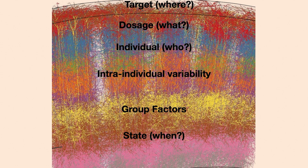To sum up, TMS-fMRI can be used to explore all kinds of factors: the stimulation site, the applied dose, how individuals respond, and how different patient groups or populations respond differently. However, it's important to note that we only get a glimpse of what's really going on, because all of these parameters are not independent from each other. I think we need more sophisticated approaches — perhaps using machine learning algorithms — to test all kinds of different parameter combinations in one session and find the optimal combination of parameters for each individual.